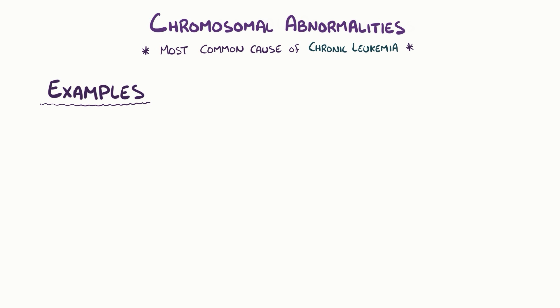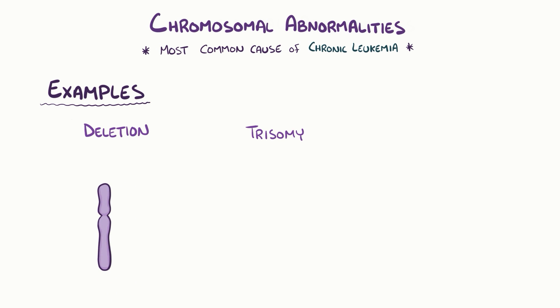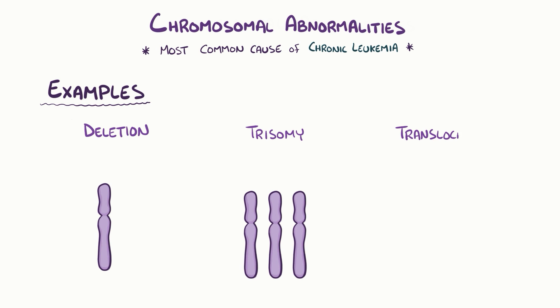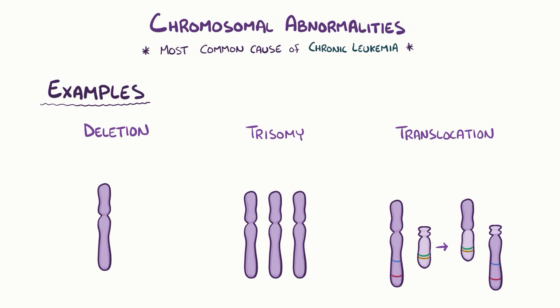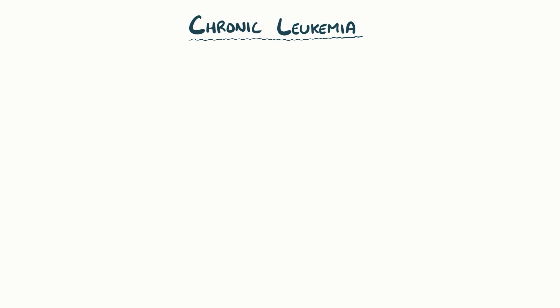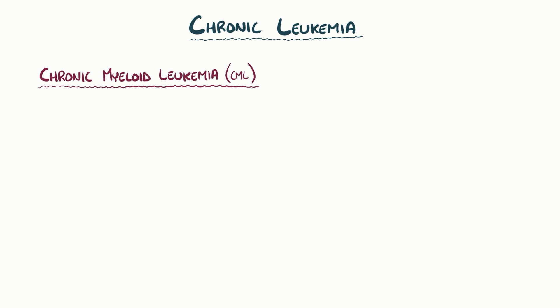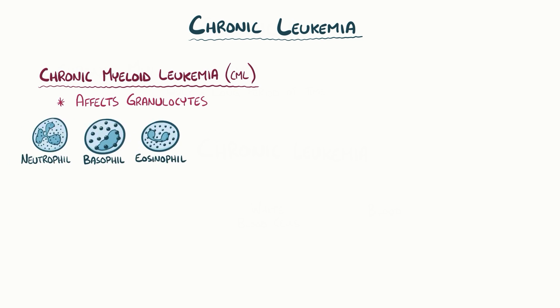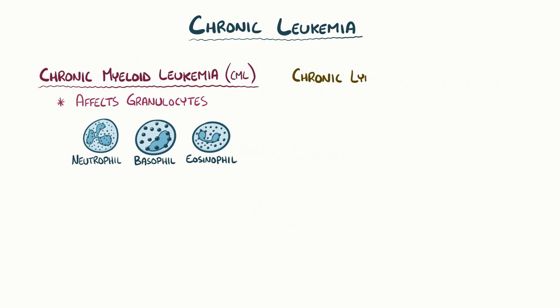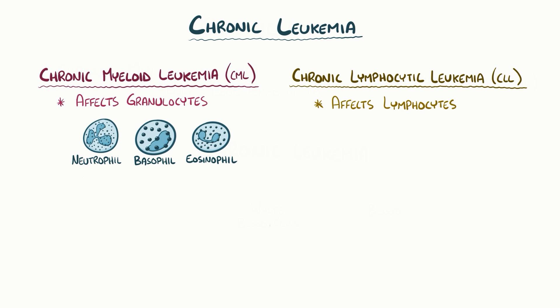Some examples of abnormalities include a chromosomal deletion where a part of a chromosome is missing, a trisomy where there's one extra chromosome, and a translocation where two chromosomes break and swap parts with each other. There are two types of chronic leukemia. The first is chronic myeloid leukemia, or CML, which is caused by a particular chromosomal translocation that affects granulocytes. The second is chronic lymphocytic leukemia, or CLL, which is caused by a variety of chromosomal mutations that affect lymphocytes, in particular B cells.